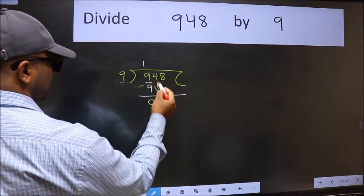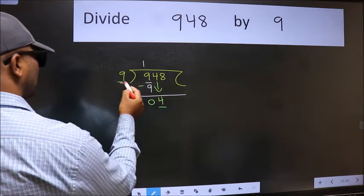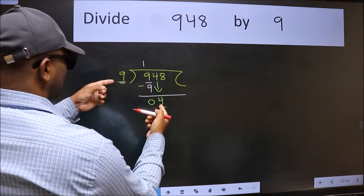After this, bring down the next number. So 4 comes down. Now here we have 4 and here 9. 4 is smaller than 9.